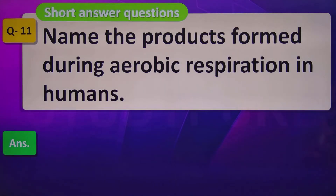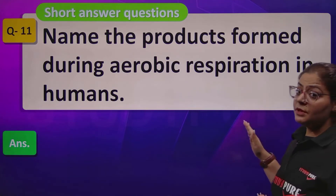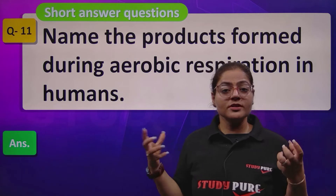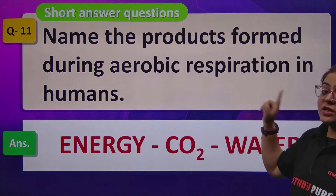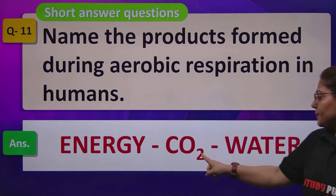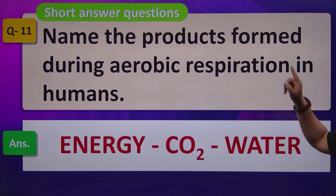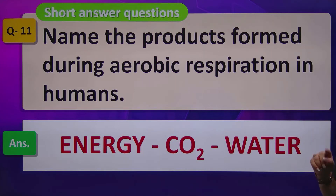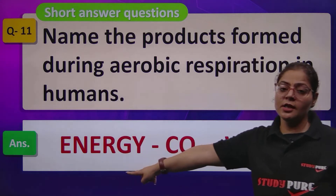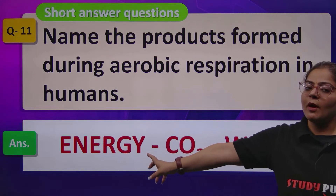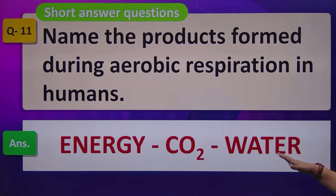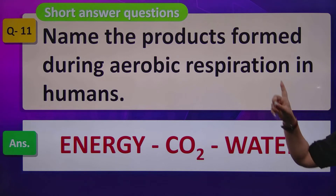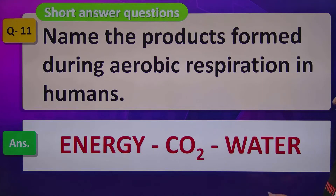Name the products formed during aerobic respiration in humans. Aerobic respiration happens in the presence of oxygen, and during this process food is broken down. The equation is very important. The by-products are energy, carbon dioxide, and water. This energy is used for all your body functions; carbon dioxide is released and used by plants, and water is also generated and utilized by the body.